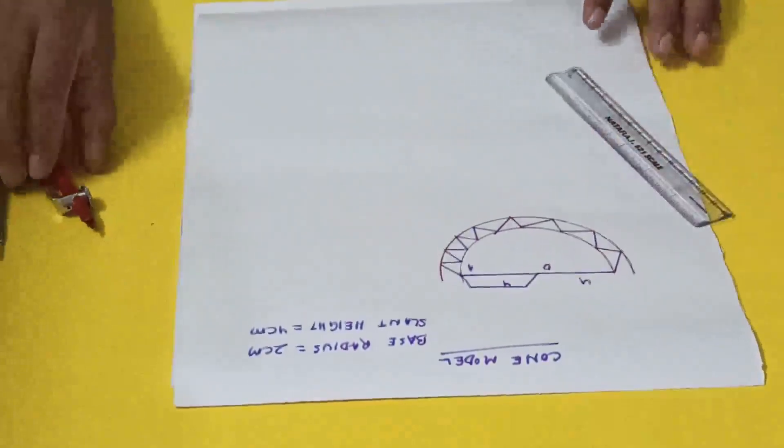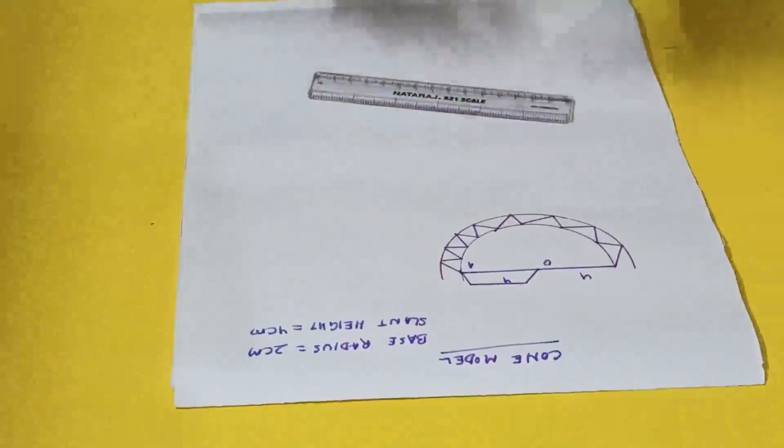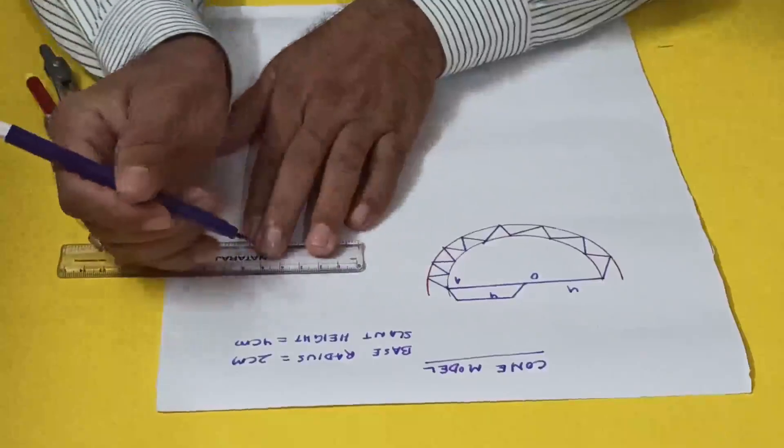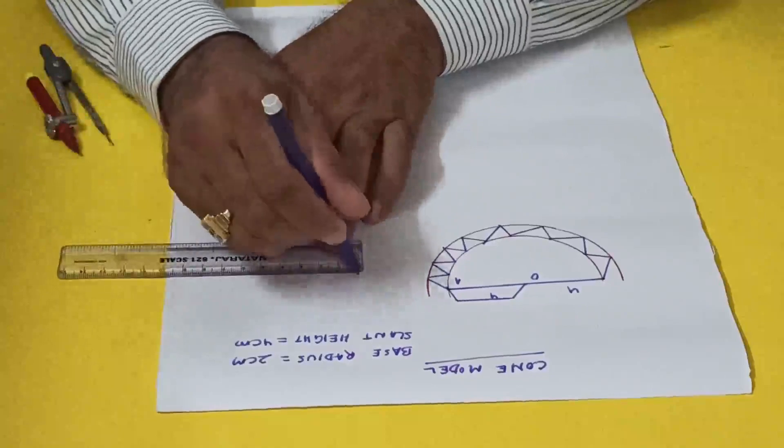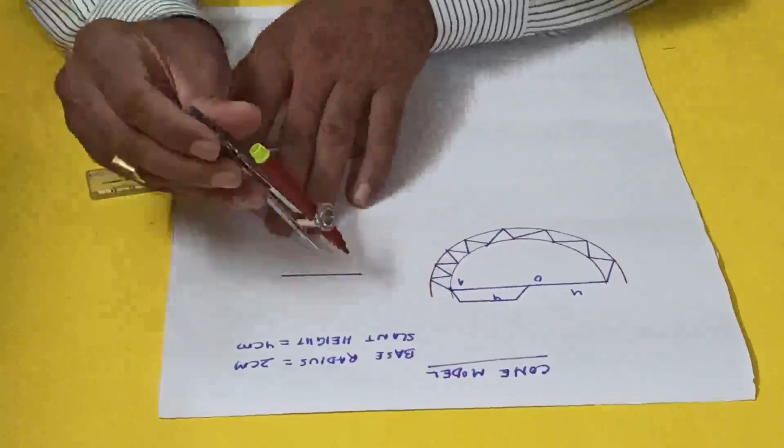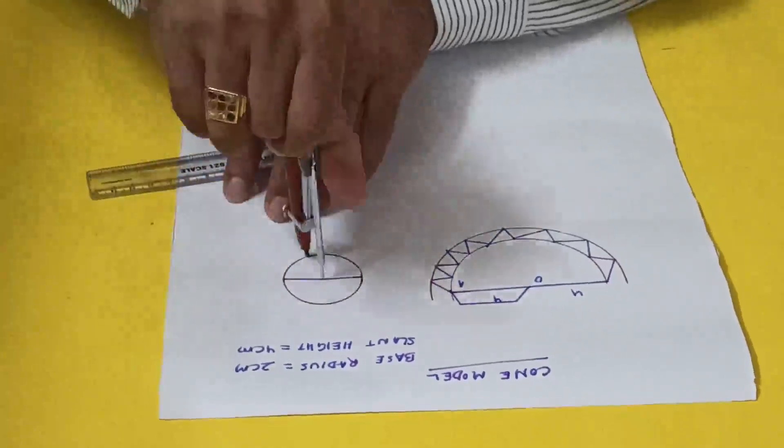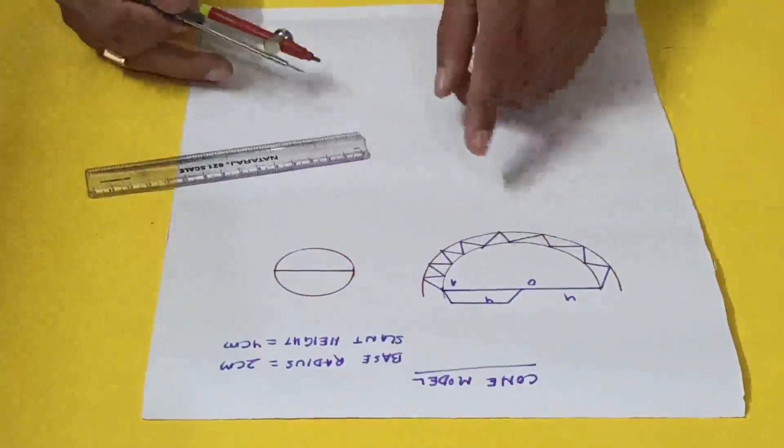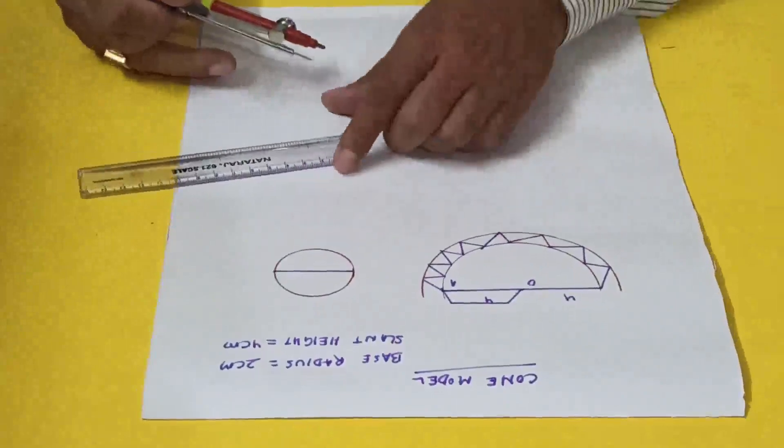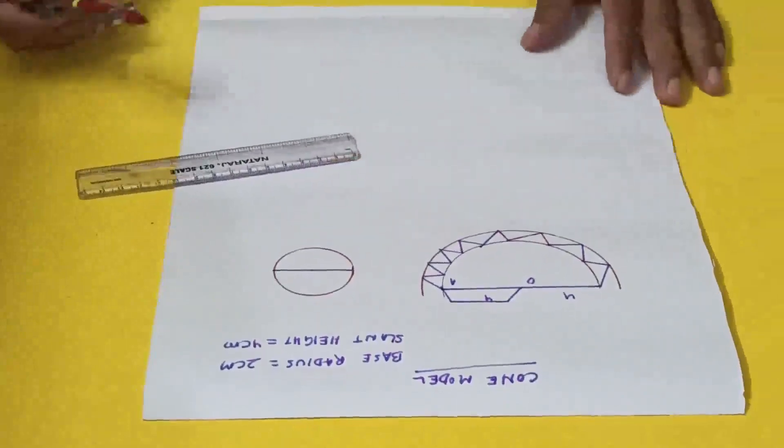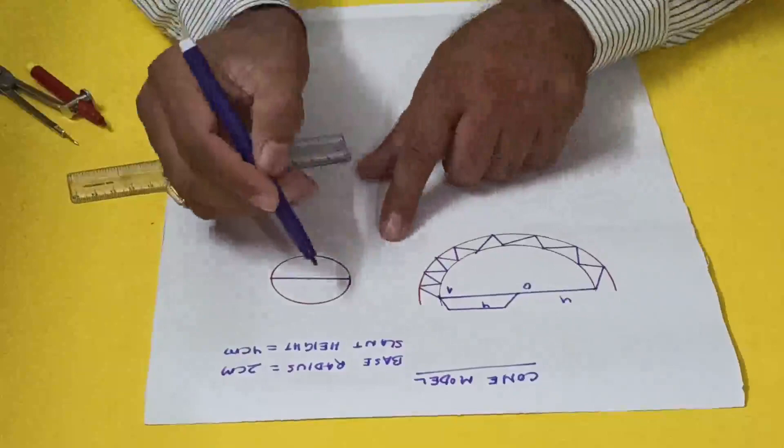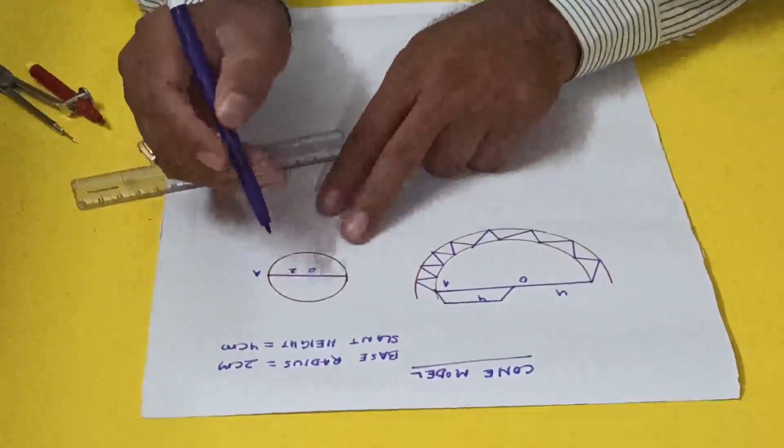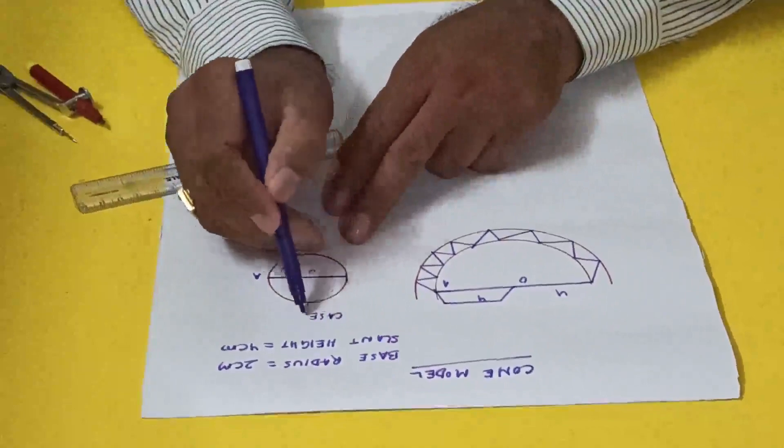So the slant surface is over. Now the base side - the base is 2 centimeter, 4 centimeter diameter, and we can keep it here or here anywhere. I'm keeping it here. I'm not keeping the border on this side. Now suppose this is case 1 - OA is 2 centimeters.